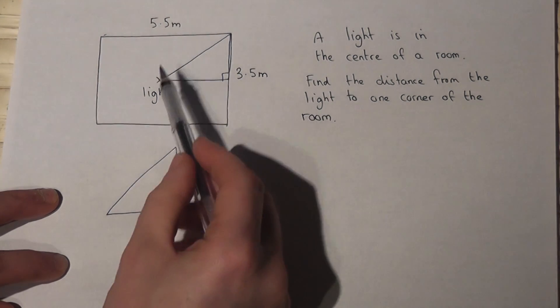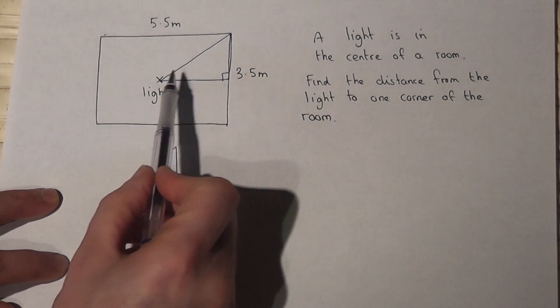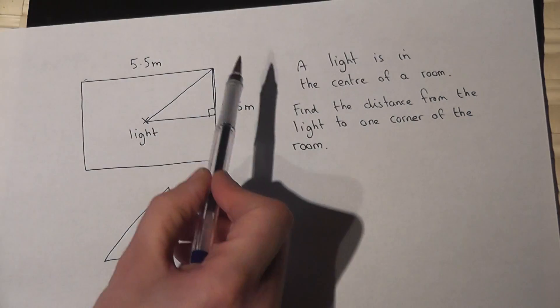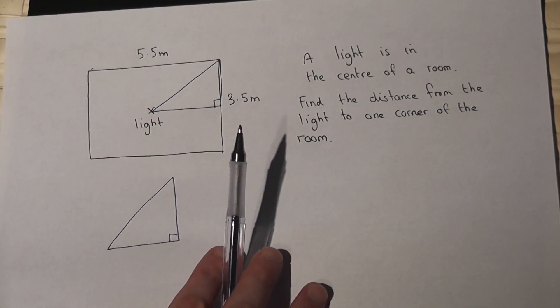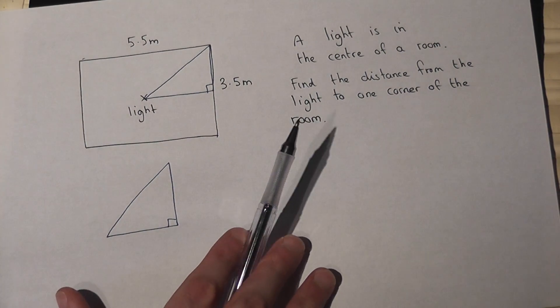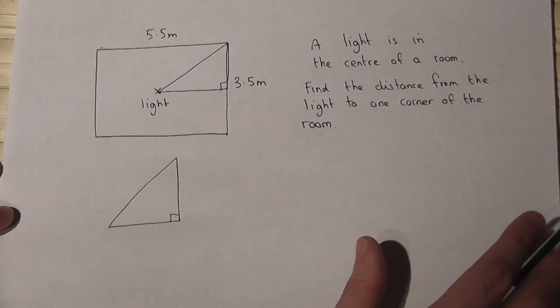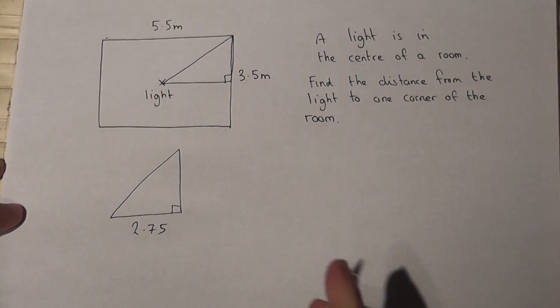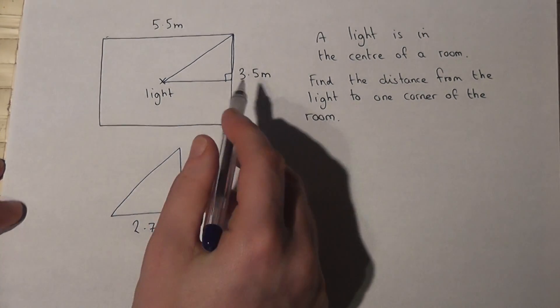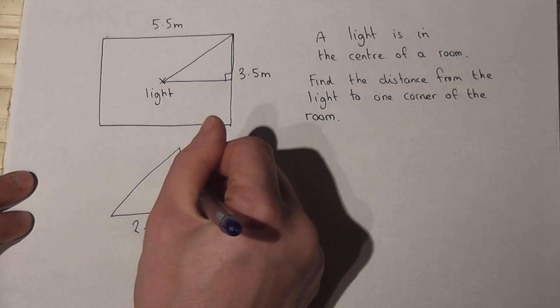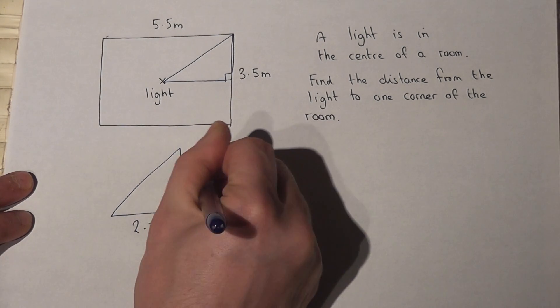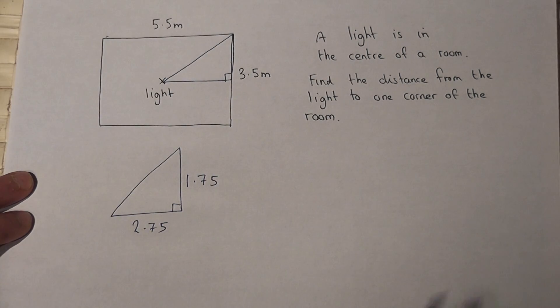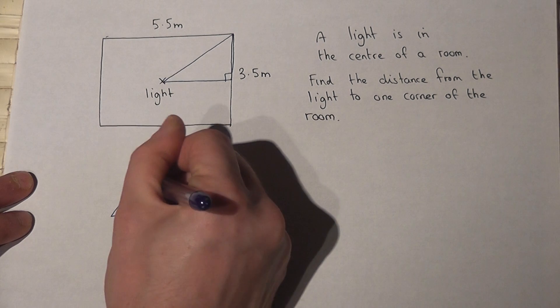Now because the light is in the center of the room, this distance here must be a half of 5.5 which is just 2.75, and this distance here must be a half of 3.5 which is 1.75, and I want to find out this distance here which we'll call x.